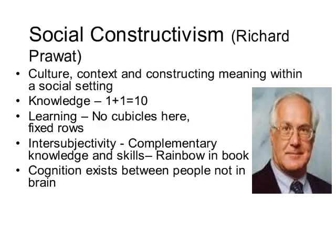Inner subjectivity, complementary knowledge and skills — the rainbow in the book. The idea of inner subjectivity is that you bring people into a conversation and they all have their own declarative knowledge, their own procedural knowledge, their own episodic knowledge, their own imagery. When we come together in a classroom and we're interacting, we each bring our unique elements. Those unique elements get shared in a way that we learn from each other. Understanding each other is a really key element — that's the foundation of inner subjectivity.